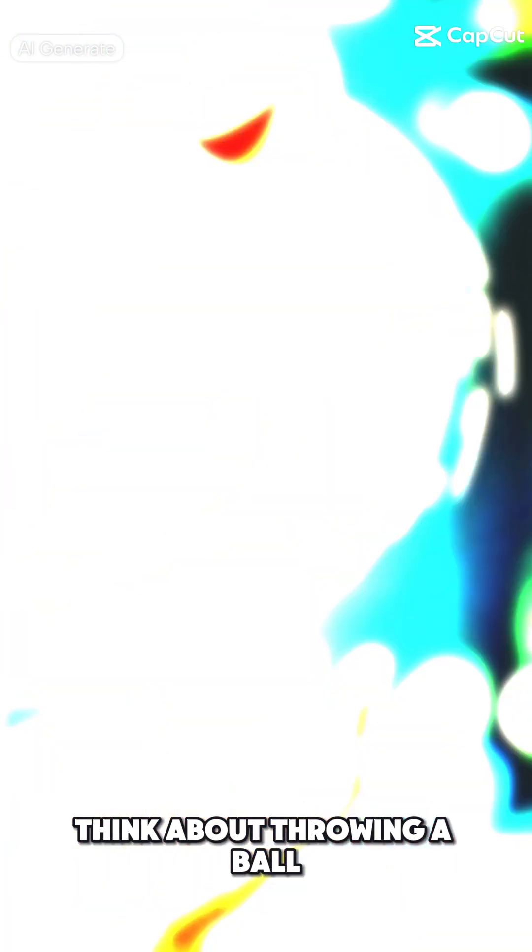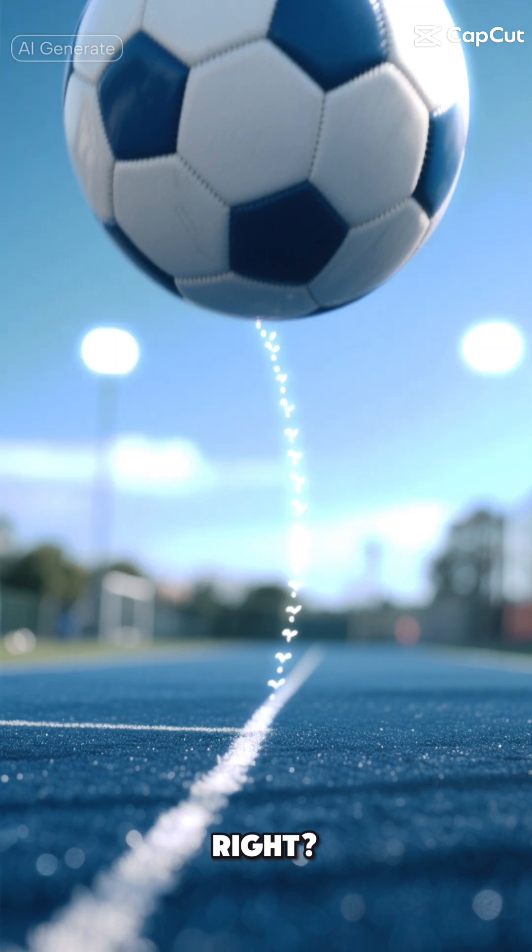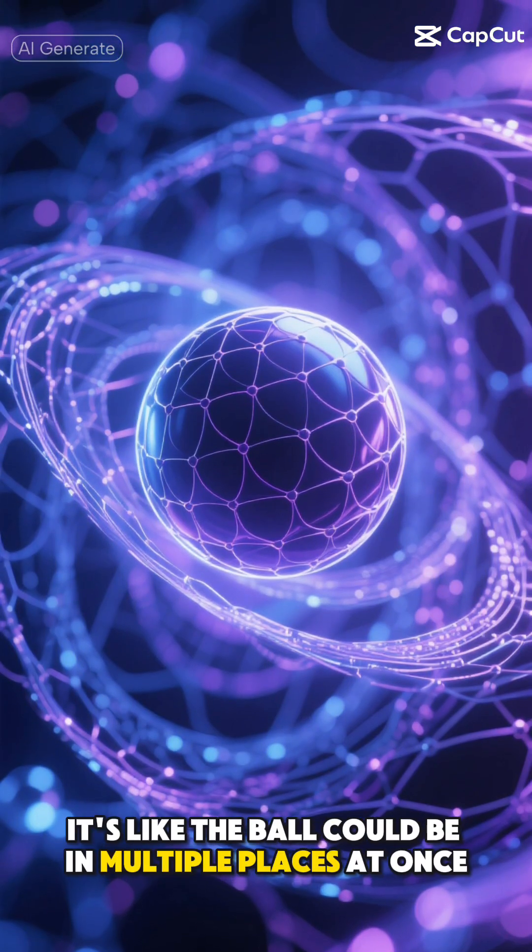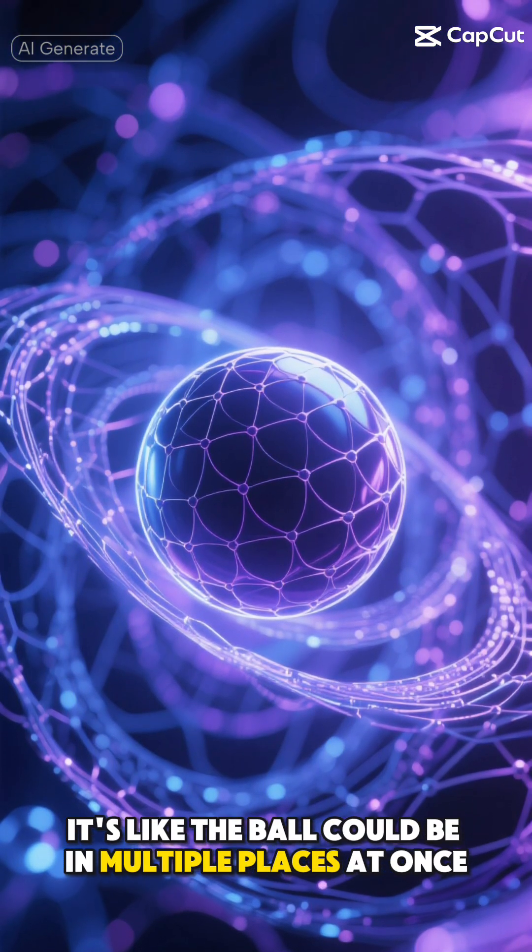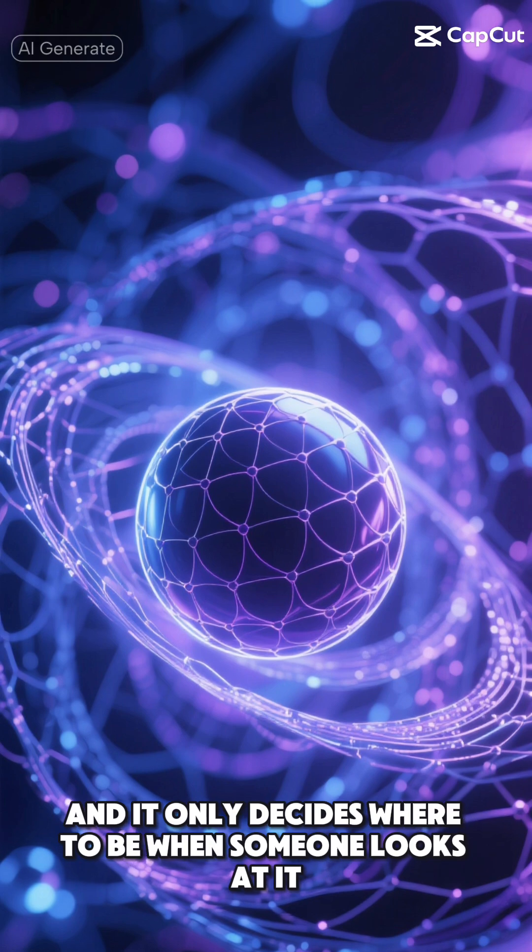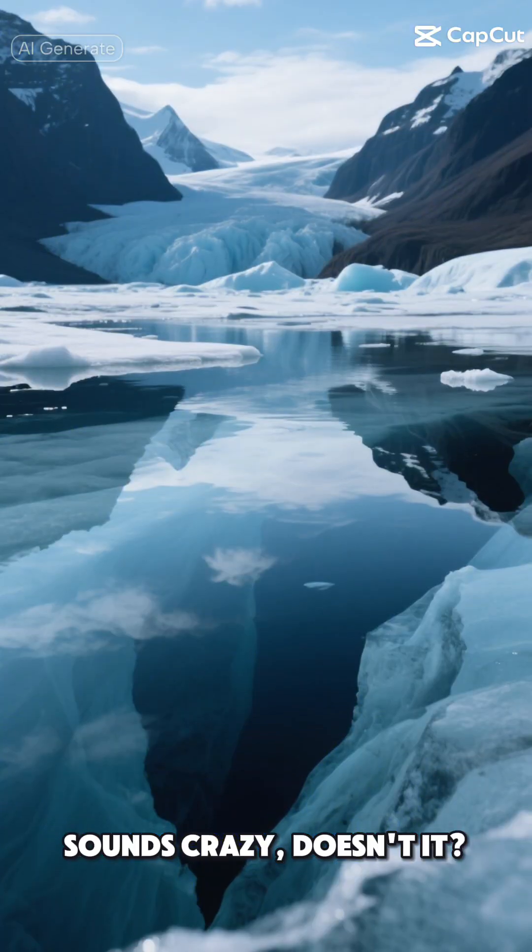Think about throwing a ball. You know exactly where it'll go, right? Well, in the quantum world, it's like the ball could be in multiple places at once, and it only decides where to be when someone looks at it. Sounds crazy, doesn't it?